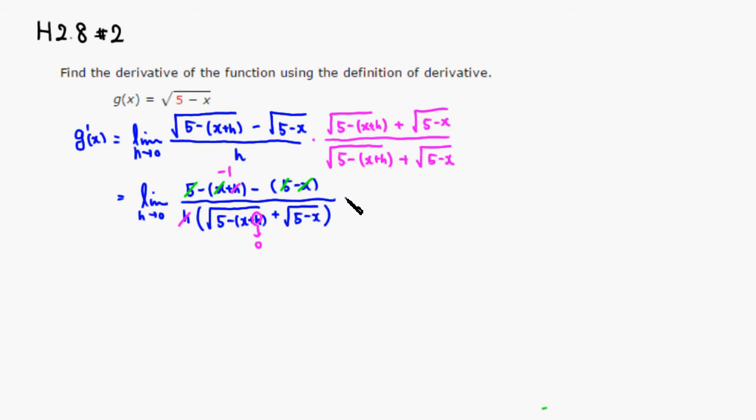Then what you get is, you have a negative 1 on top. Then you have a square root of 5 minus x plus another square root of 5 minus x. So it's 2 square root of 5 minus x.